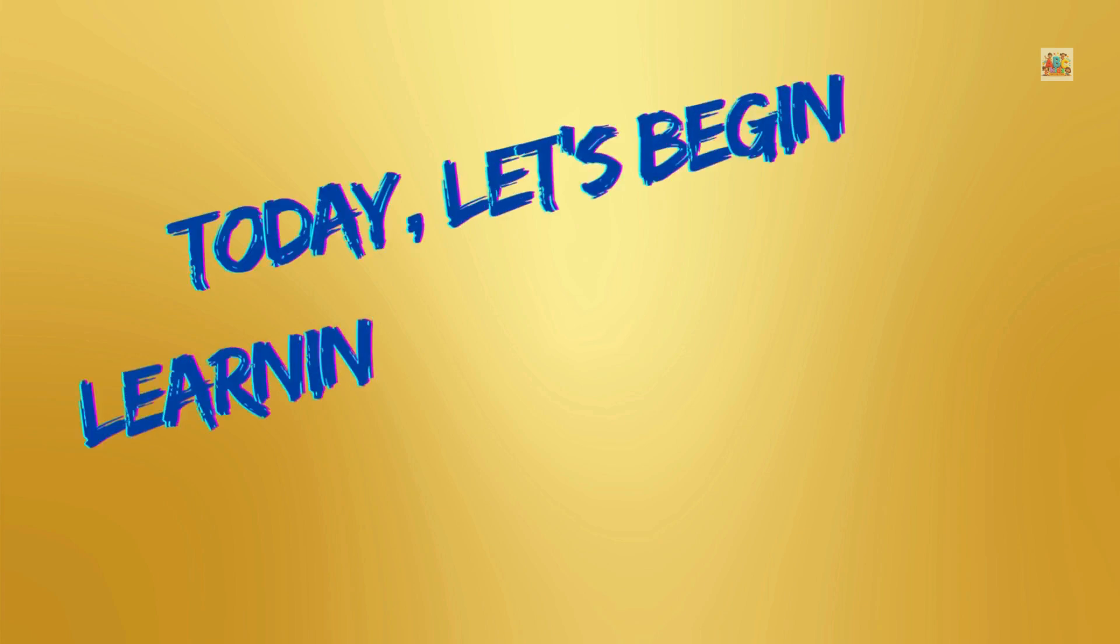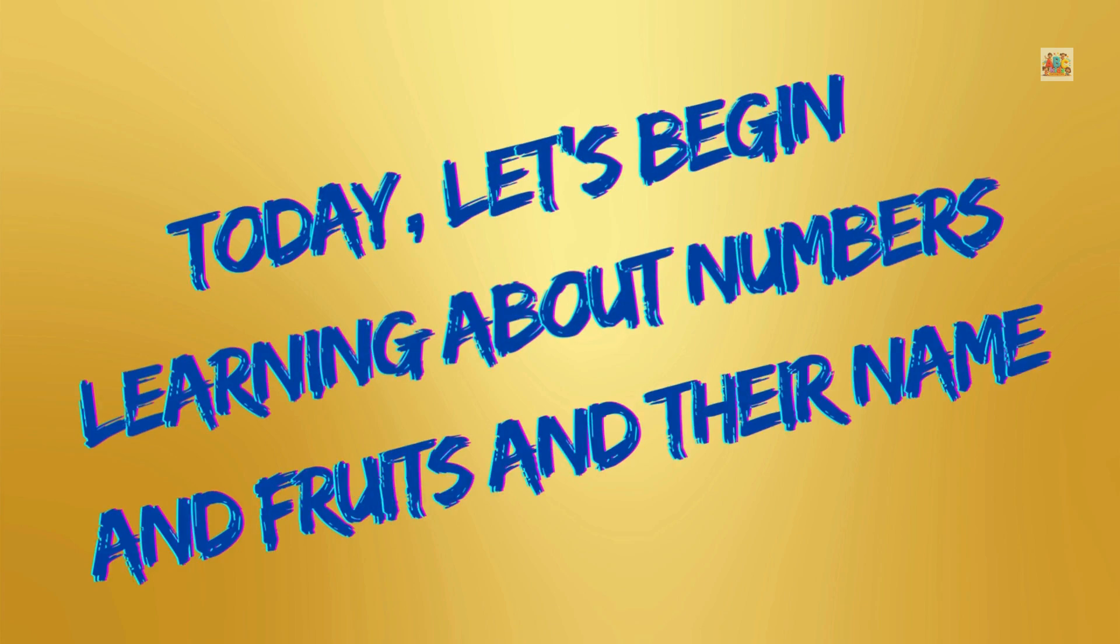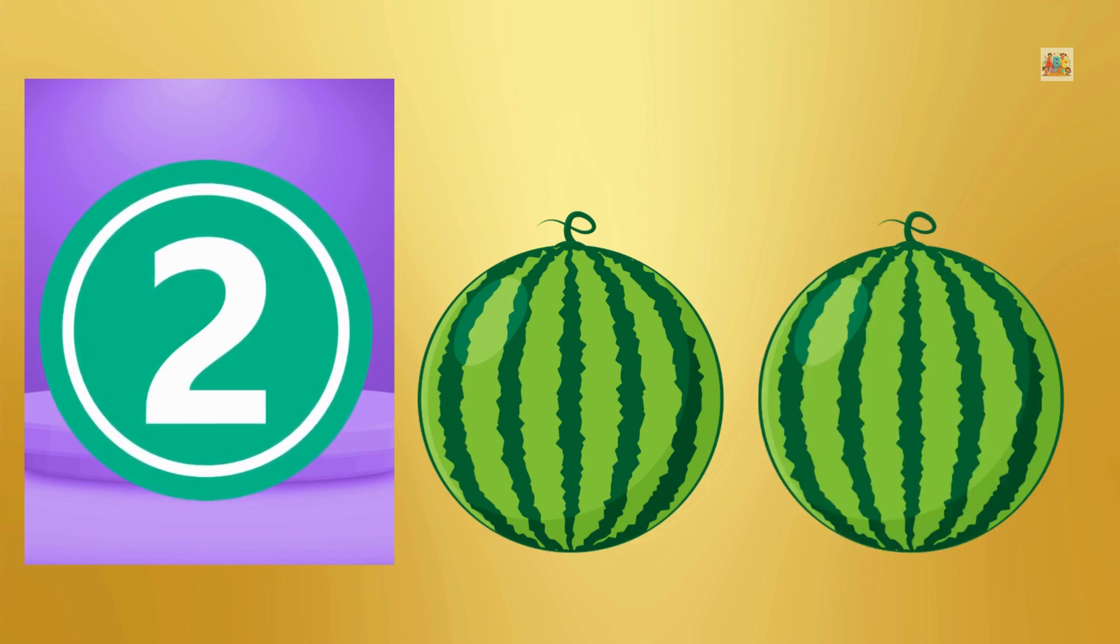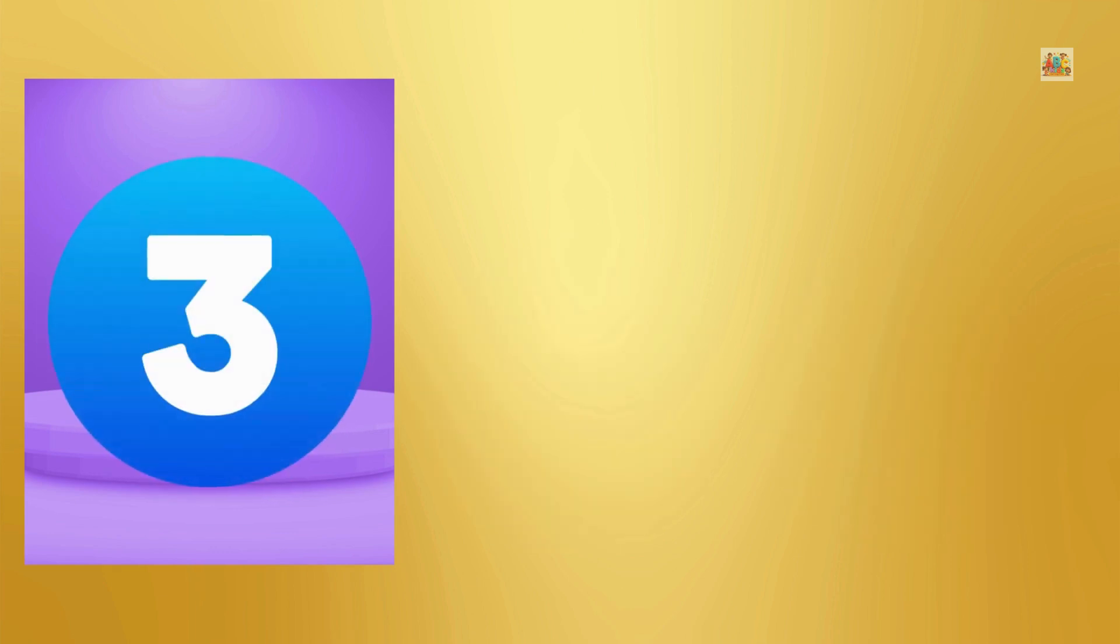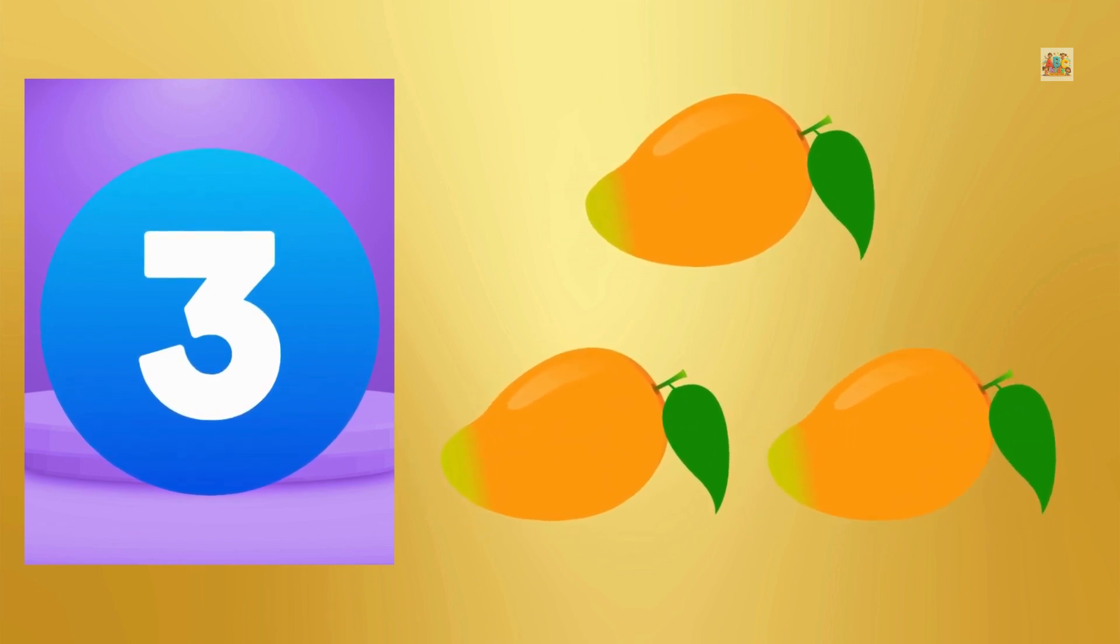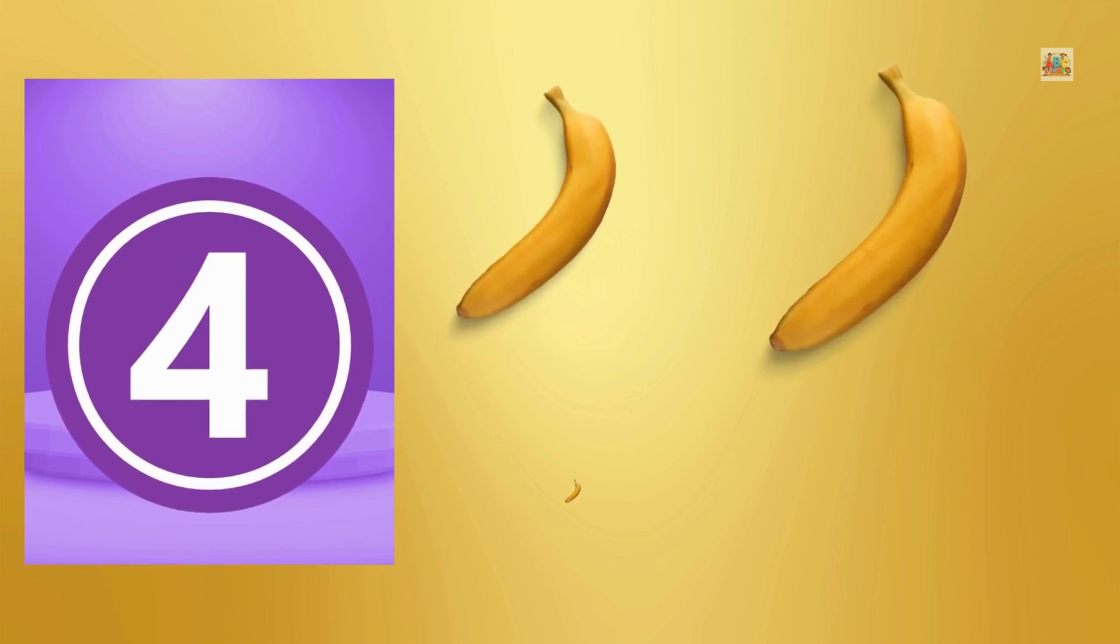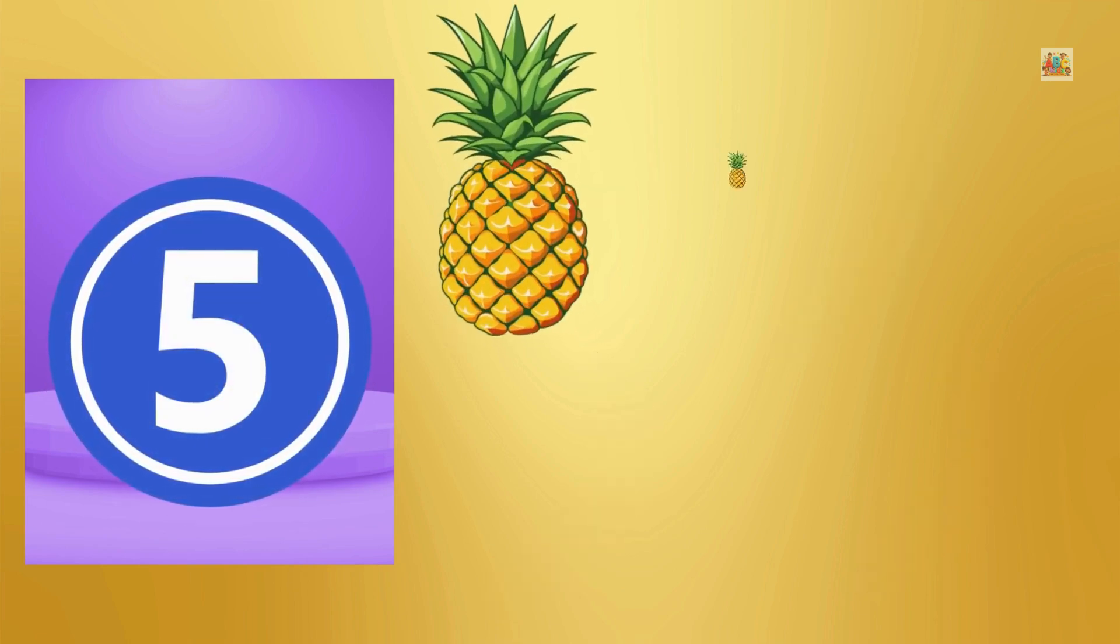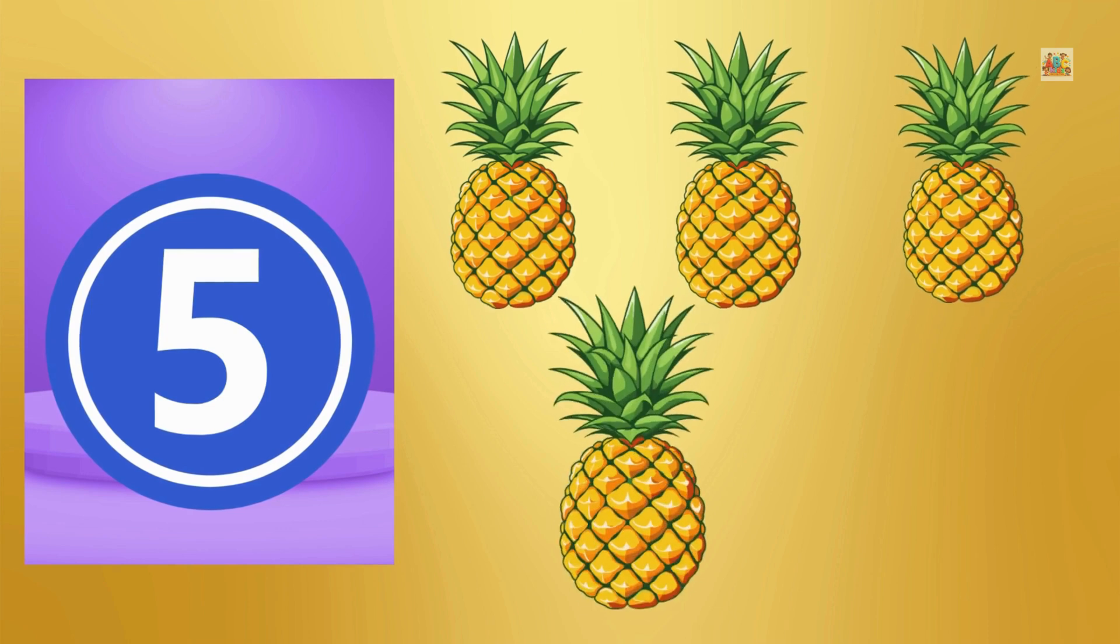Hello kids, today let's begin learning about numbers and fruits and their names. One, one apple. Two, one two, two watermelons. Three, one two three, three mangoes. Four, one two three four, four bananas.